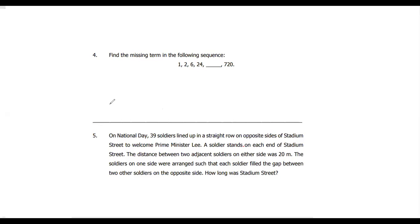Question number 4: find the missing term in the sequence. Whenever you get a sequence, first find the difference. The difference between 1 and 2 is 1, between 2 and 6 is 4, between 6 and 24 is 18. So you don't see a common difference — it's not a linear sequence with a constant difference.